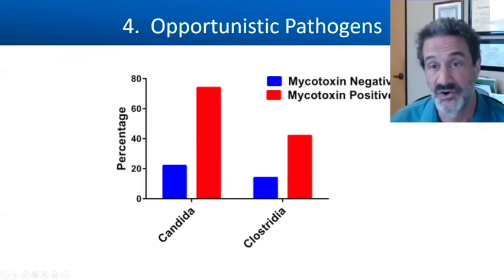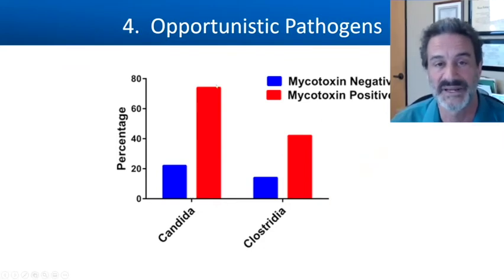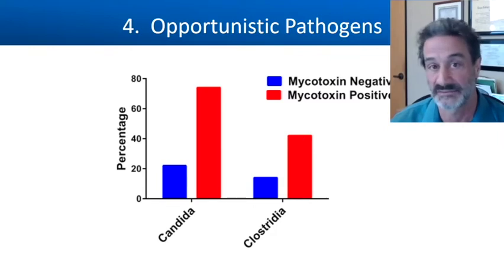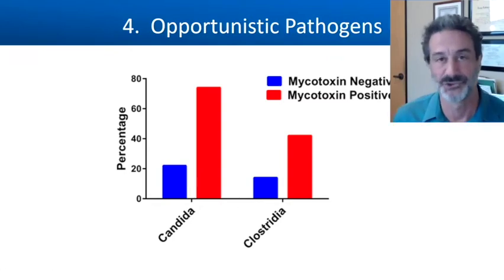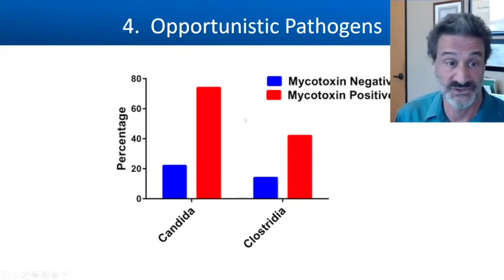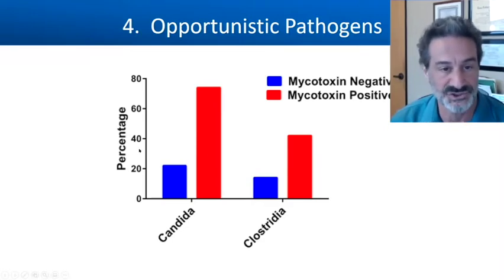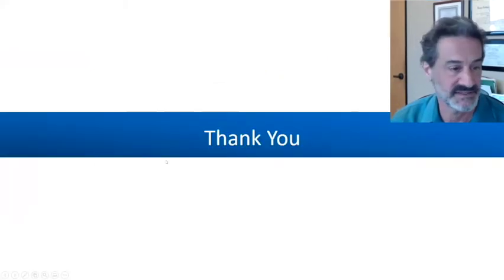Regarding opportunistic pathogens: mycotoxin-positive folks had a lot more Candida and Clostridia findings. Fungi like Candida may thrive in the same milieu. The mycotoxins are always immunosuppressive, so if you have Clostridia or Candida, mycotoxins could make those worse — less response from your body to treat them. And there are markers for both of these on the organic acid test.